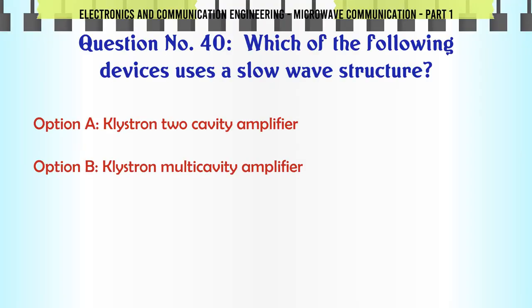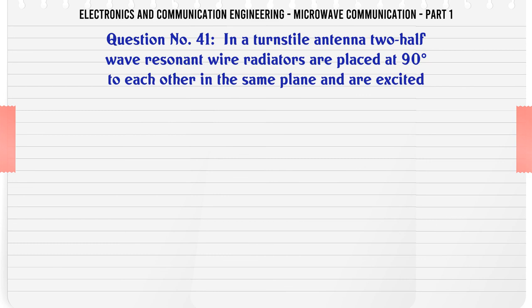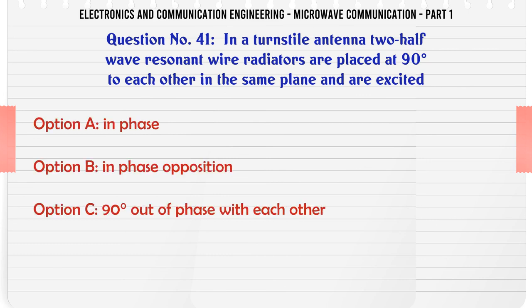Which of the following devices uses a slow wave structure? A. Klystron 2 cavity amplifier, B. Klystron multi-cavity amplifier, C. Reflex Klystron oscillator, D. TWT. The correct answer is TWT.